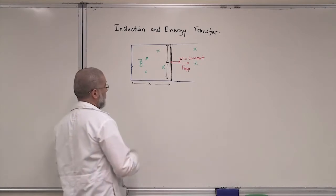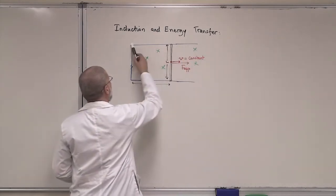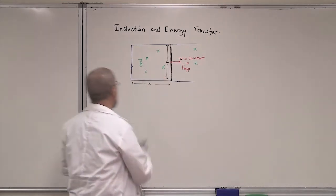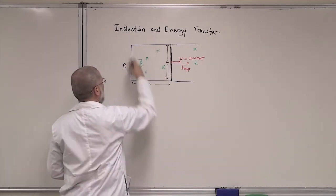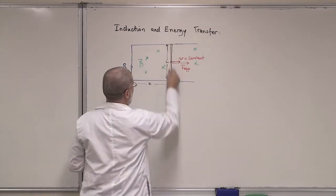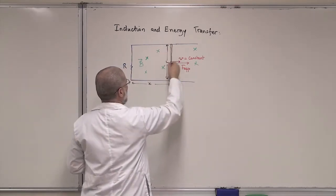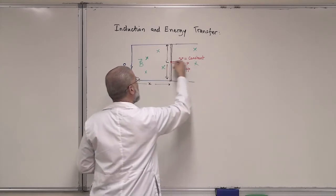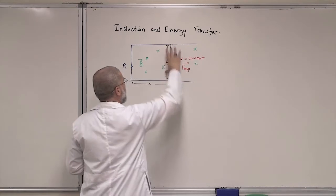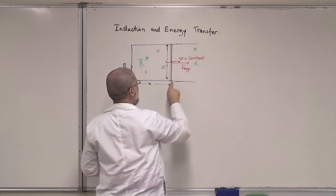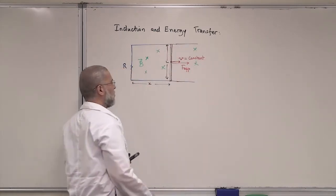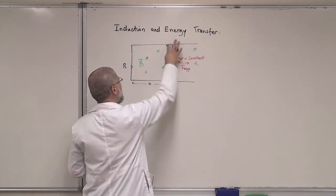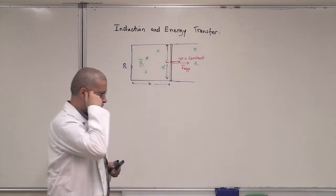Look at this figure here. We have a rail — the blue one — which has a resistance R. And then we have a rod, this black one, of length L, and I'm moving it. I'm applying a force F applied, moving it to the right on this rail. We assume that there is no friction where the rod is touching the rail.